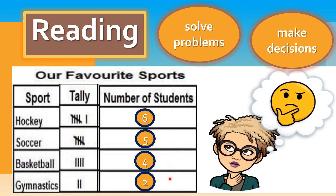What did you notice about the numbers and the tallies on our graph? They have a special order. Did you realize that they are in order from greatest to least, or from biggest to smallest? If you recognize that, you should give yourself four pats on the shoulder because you are one smart cookie.